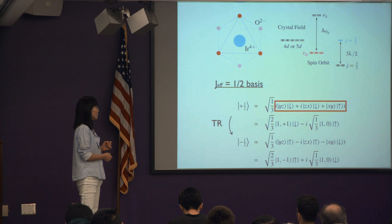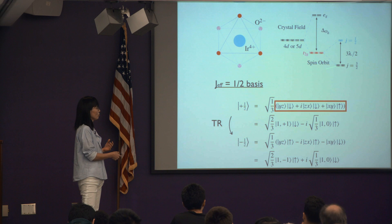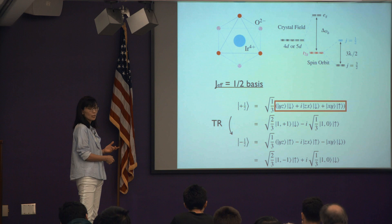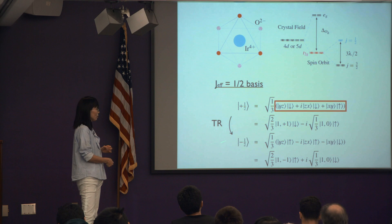For iridates with five d-electrons (4D5 or 5D5), you fill the j_eff = 3/2 completely (four electrons) and are left with a half-filled j_eff = 1/2 pseudo-spin problem. The j_eff = 1/2 wavefunctions are equal-weight linear combinations of the t_2g orbitals: xz and yz act like px and py, while xy acts like pz. The pseudo-spin-up state is composed of xz and yz with spin-down components, and time-reversal generates the other Kramers partner.